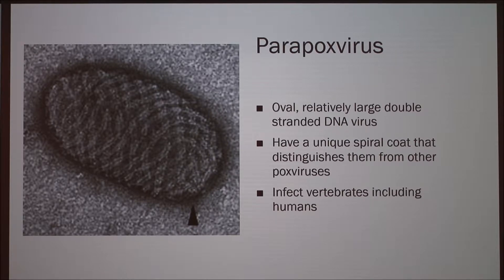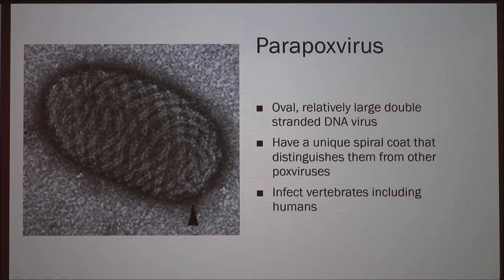The parapoxvirus infects vertebrates, including a number of mammals and humans. Here's a picture of the virus — you can't really see the spiral on it. That's probably electron microscopy, since you can't see a virus with a light microscope.